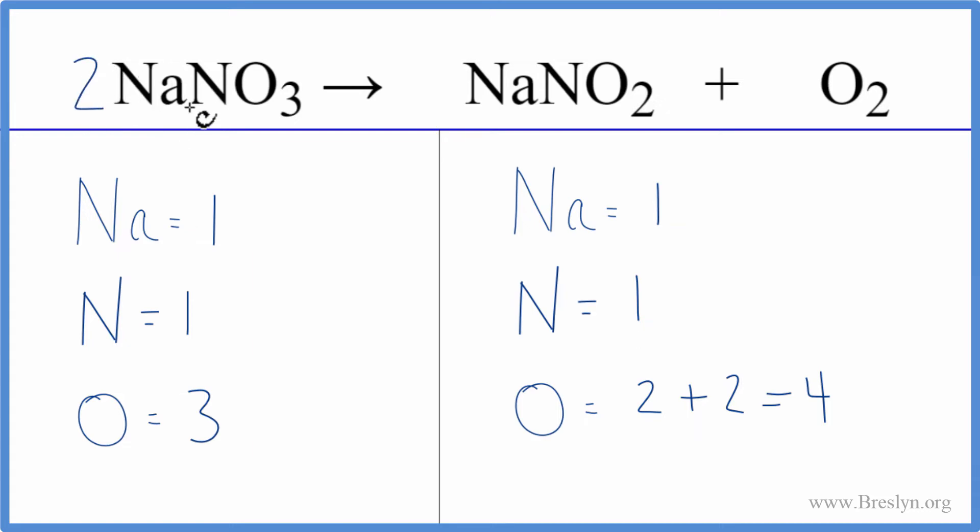So we have one times two, that gives us two sodiums, one nitrogen times two, that'll give us two nitrogens, and the three oxygens times two, that'll give us six oxygens. So now we have an even number.